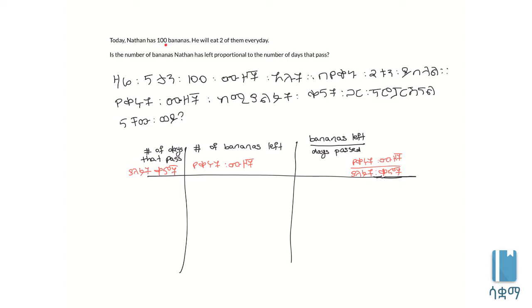Today Nathan has 100 bananas. He will eat two of them every day. Is the number of bananas Nathan has left proportional to the number of days that pass?